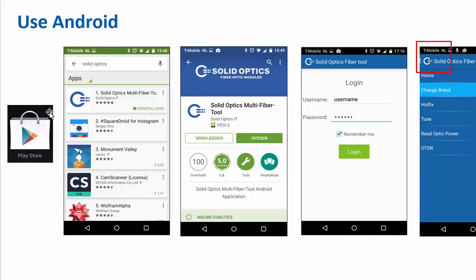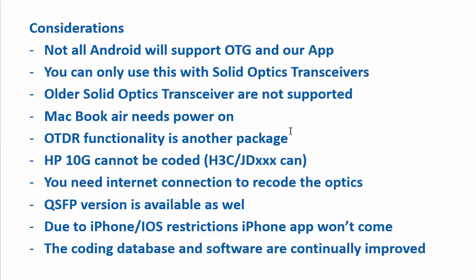For Android, just click on the Play Store and search for SolidOptics. If your phone has OTG you will see the SolidOptics app pop up. Click on Open, fill in your username and password, and click on the top left corner to get into the menu — for example to change the brand, the whole fix, and so on.